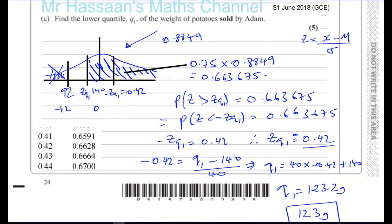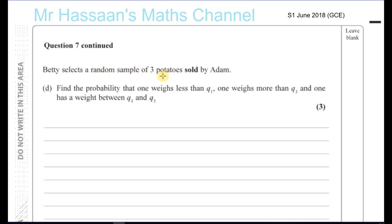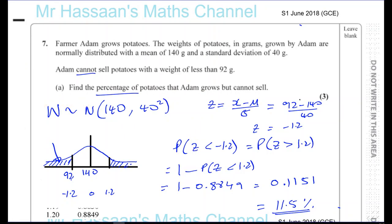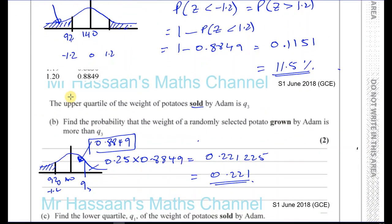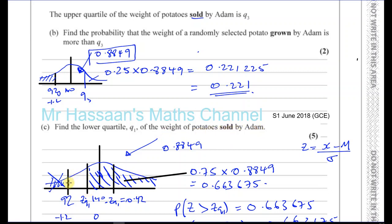That's the answer for Part C. Now for Part D: Betty selects a random sample of three potatoes sold by Adam. We need to find the probability that one weighs less than Q1, one weighs more than Q3, and one has a weight between Q1 and Q3. Remember, Q1 and Q3 here are the lower and upper quartiles of what was sold by Adam — only the portion over 92 grams — not of the whole batch.